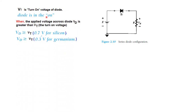The diode is ON when the applied voltage across the diode, VD, is greater than VT — that is, greater than 0.7V for silicon and greater than 0.3V for germanium.